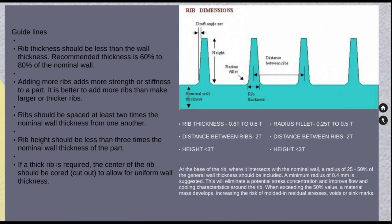Rib height should be spaced at least two times the nominal wall thickness from another rib to improve mold flow. Rib height should also be less than three times the nominal wall thickness of the part. In instances where a thicker rib is required, material can be carved out from the bottom of the rib to allow uniform wall thickness — this will help to reduce sink marks during the cooling process.